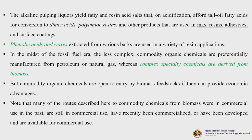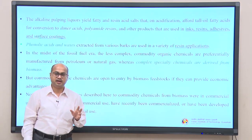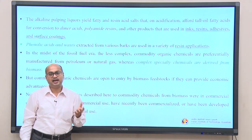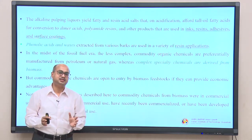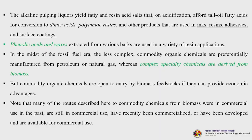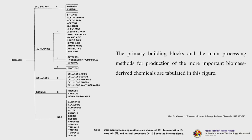Commodity organic chemicals are open to entry by biomass feedstocks if they can provide economic advantage. The two most important cost factors are: the extraction step must be economical, and the purification or downstream processing must also be economical. Both steps are major contributors to the overall cost of the final product. From the primary biomass feedstocks, one can derive various commodity chemicals — from C5 sugars: furfural and xylitol; from C6 sugars: ethanol and other chemicals; from cellulose: acids, esters, nitrates and ethers; and from lignin: phenol, phenolic compounds, vanillin and lignosulfonates.